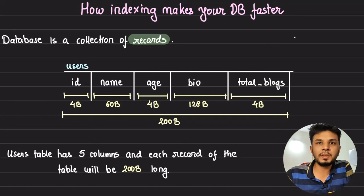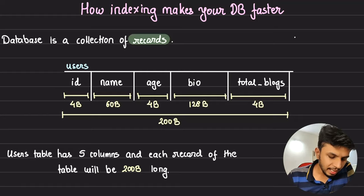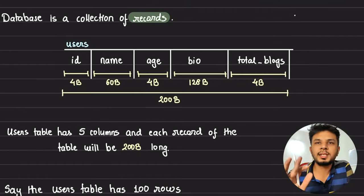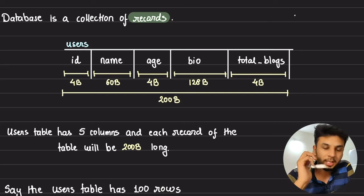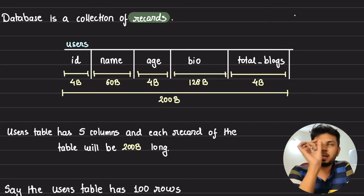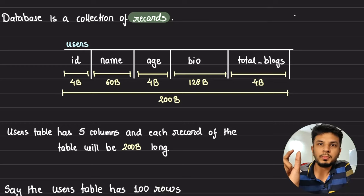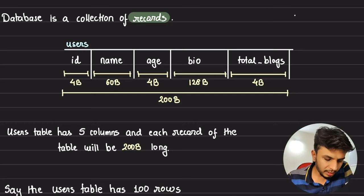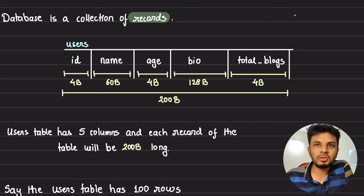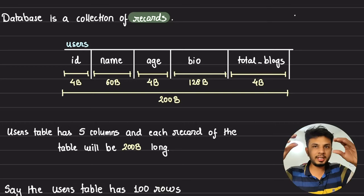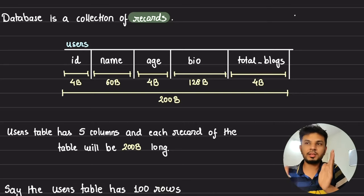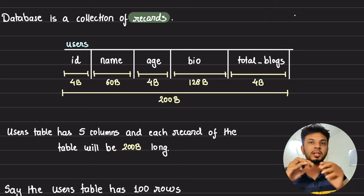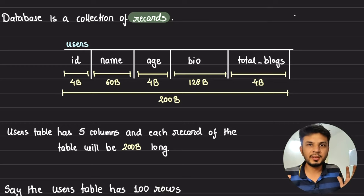We won't dive deeper into B+ trees but we'll see how it fits into the scheme of things — just a basic understanding of how indexes work. Let's say we have a users table with five columns: ID, name, age, bio, and total blocks. Every column or attribute will take up some space on the disk, which means when a row is serialized, every attribute gets its particular set of bytes stored onto the disk.